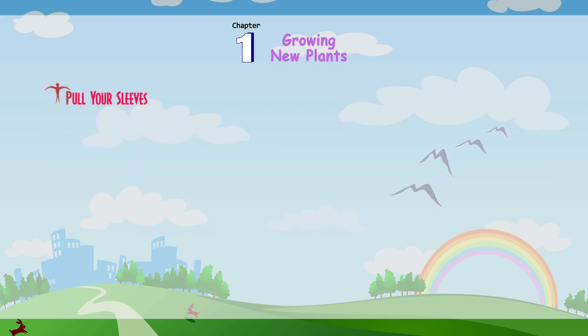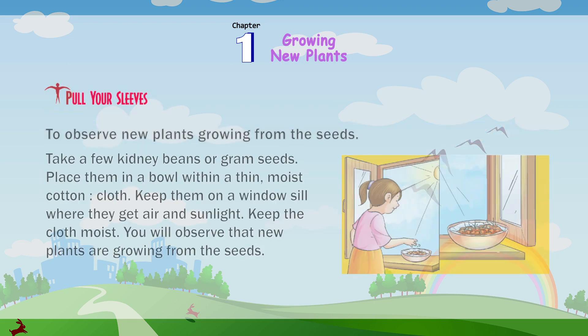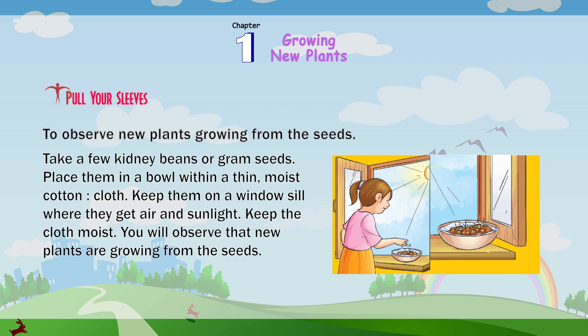Pull up your sleeves. To observe new plants growing from the seeds, take a few kidney beans or gram seeds. Place them in a bowl within a thin, moist cotton cloth. Keep them on a windowsill where they get air and sunlight. Keep the cloth moist. You will observe that new plants are growing from the seeds.